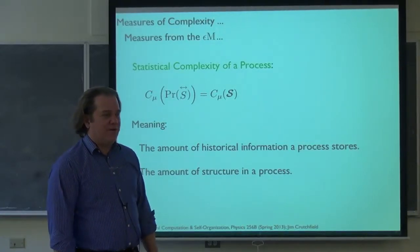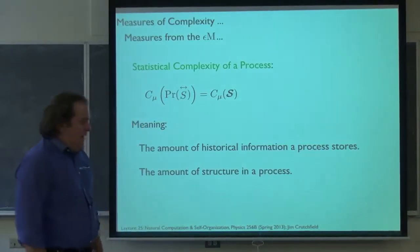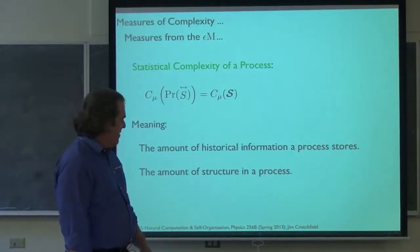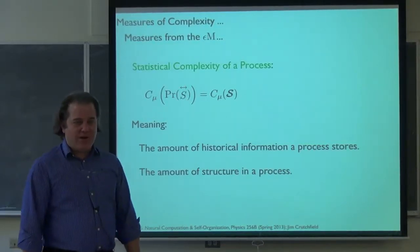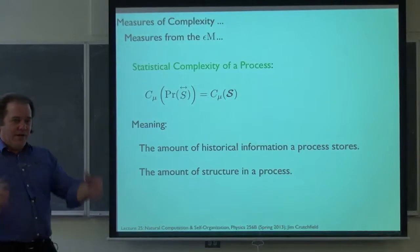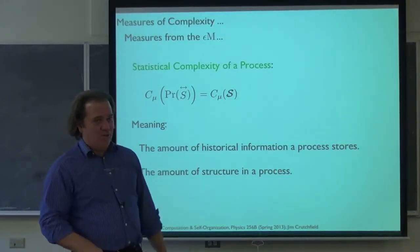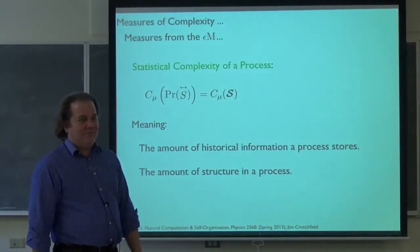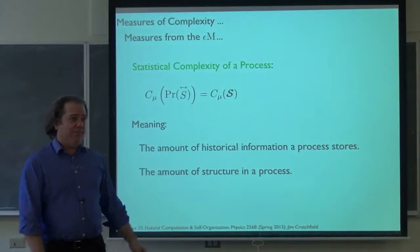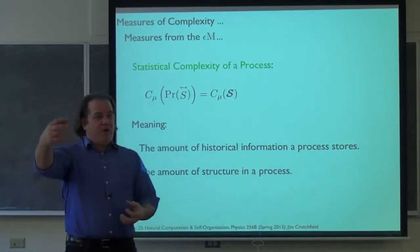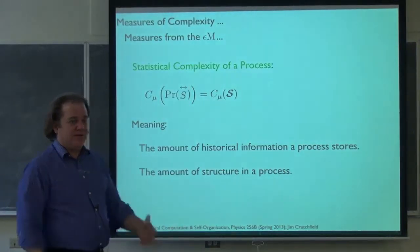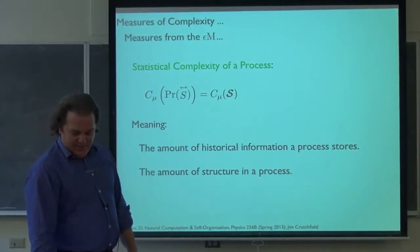At every moment in time there's some amount of past that is remembered by the process. The loci of that storage are the causal states — that should be somewhat straightforward since that's how we constructed them, grouping histories that gave equal predictions. This number is the amount of structure in a process. Thinking back to the introductory lecture, I was contrasting how in physics we have measures of disorder — thermodynamic entropy, temperature — but there's no similar systematic way of measuring how structured something is. Using the statistical complexity, we can start to compare processes on a new axis of how structured they are — a quantitative measure of structure.